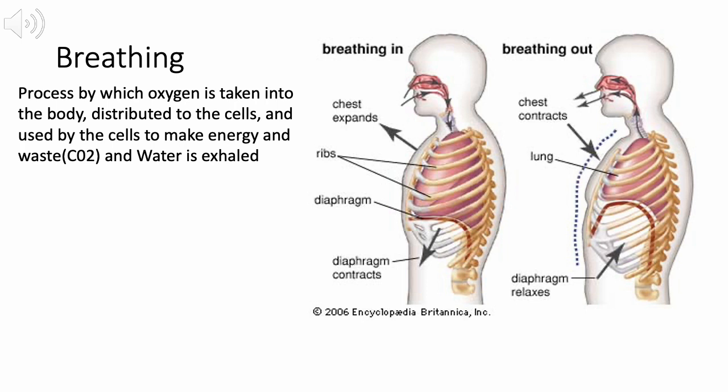Most people take breathing for granted because it's something the body does on its own. So let's break it down and examine this complex process. Step 1: What triggers us to breathe? Tiny receptors located within the spinal cord monitor carbon dioxide. When carbon dioxide levels reach a certain point, these receptors are triggered, sending a message to the brain to breathe.